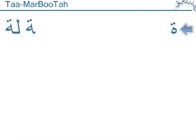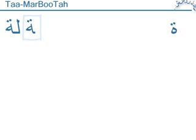The TA MARBOOTA has the shape of the HA with the two dots of the normal TA in the alphabet. On the left we have it in joined-up format — the first one here is written when joined to the end of a word, so we have LAM and then TA MARBOOTA.